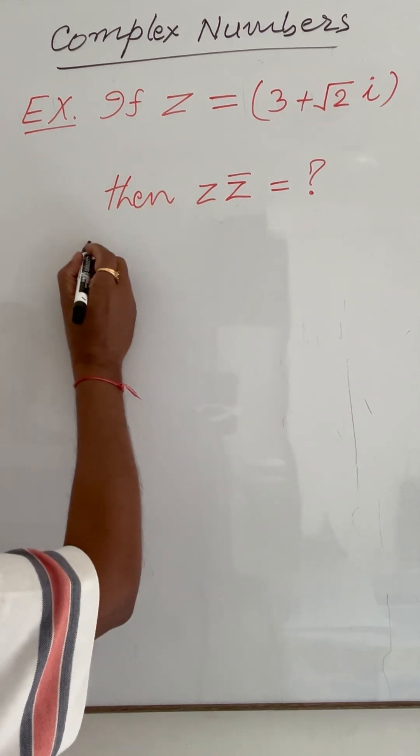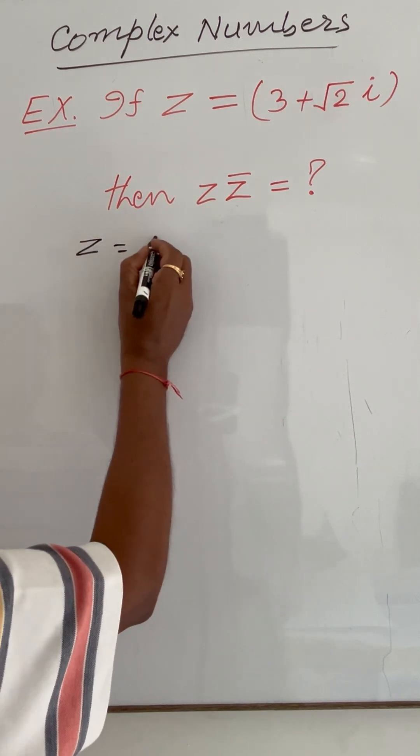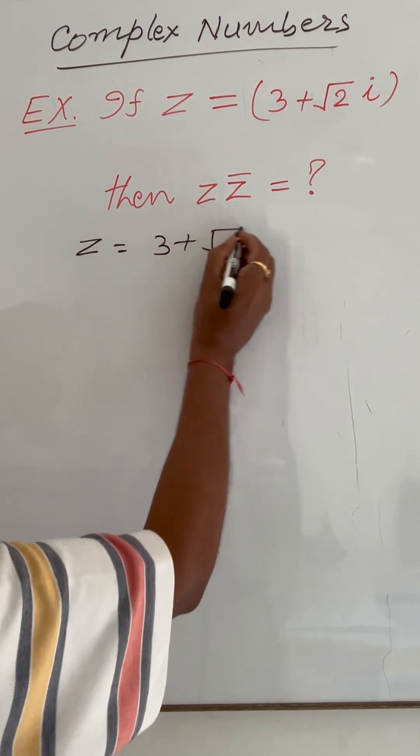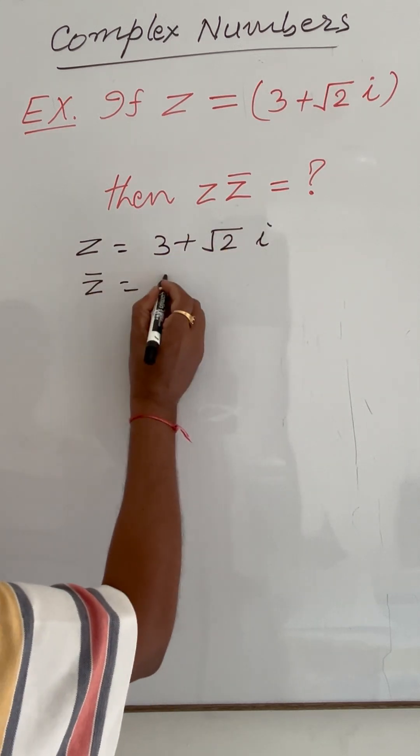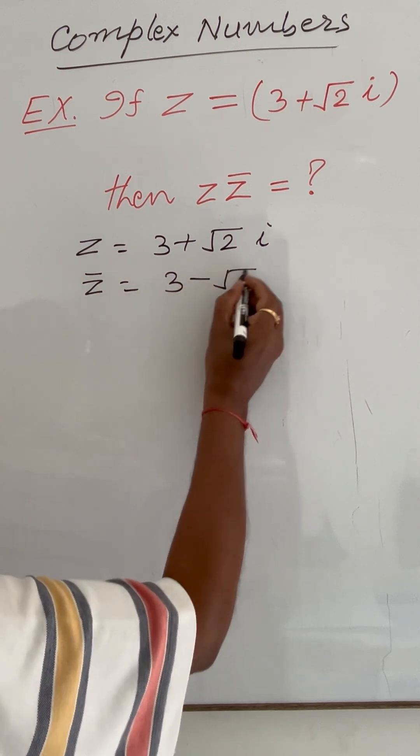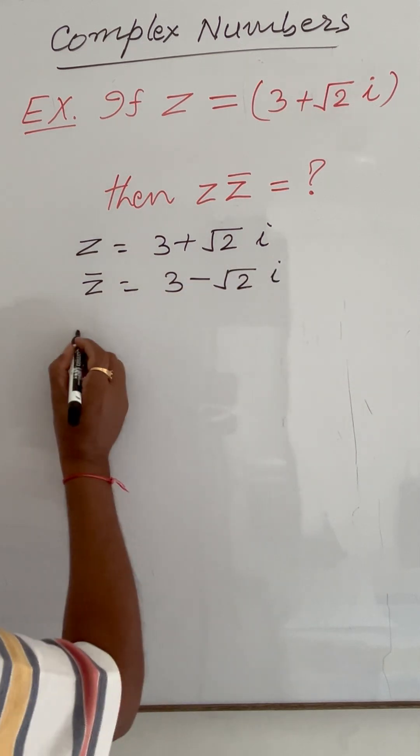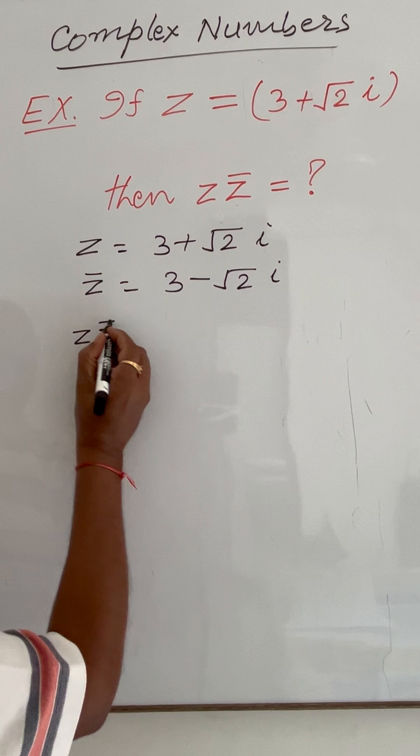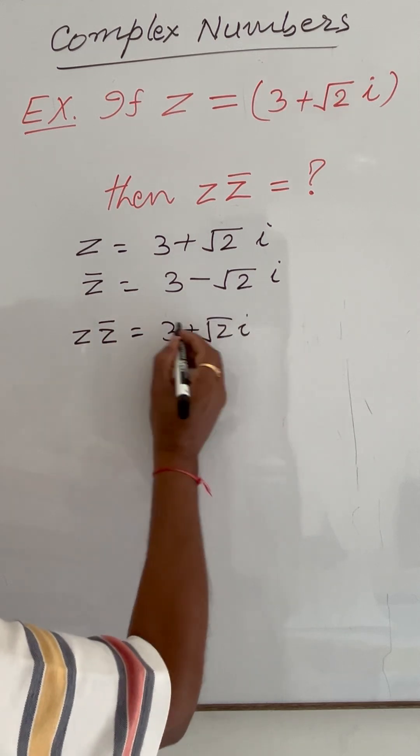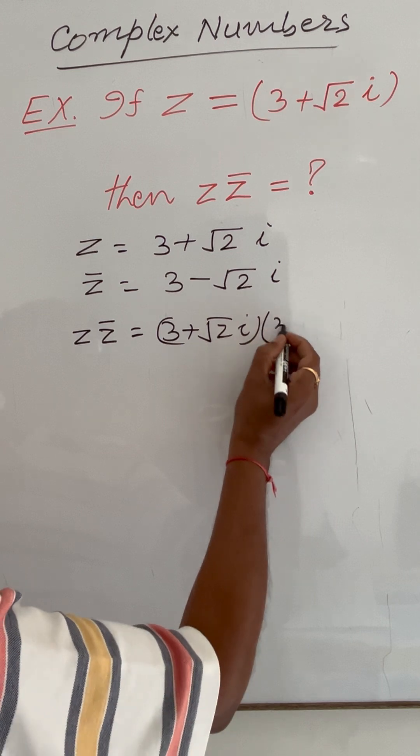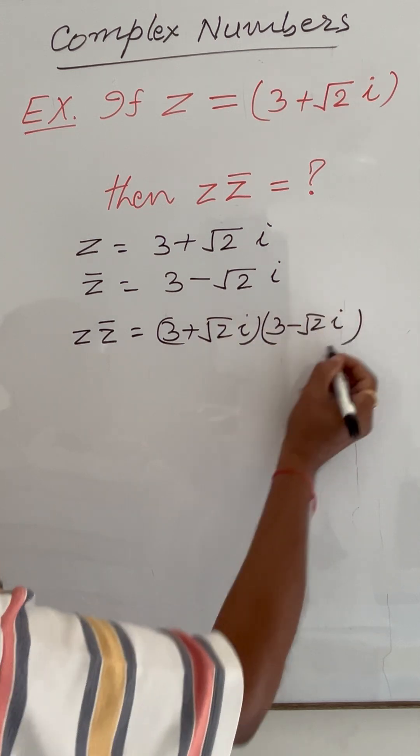Okay, so as given, Z = 3 + √2i, therefore Z̄ = 3 - √2i. And so Z·Z̄ = (3 + √2i)(3 - √2i).